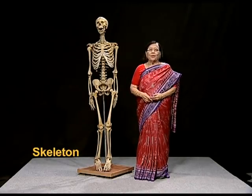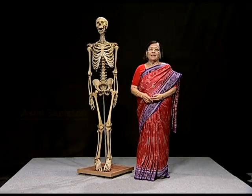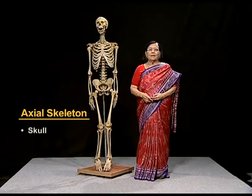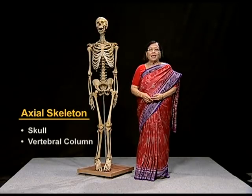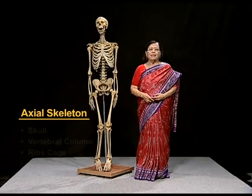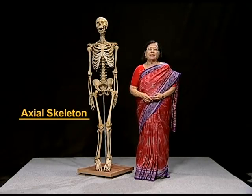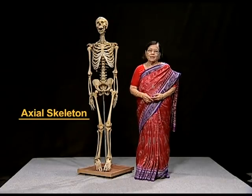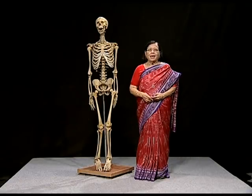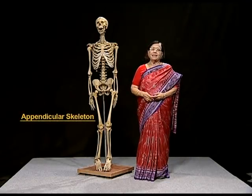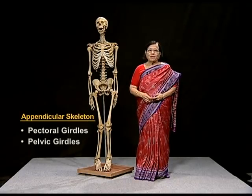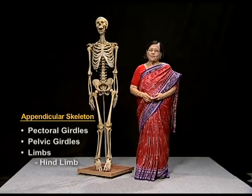As you know, skeleton has two main divisions. Axial skeleton includes the skull, the vertebral column, and the ribcage. As the name indicates, axial means axis — it makes the axis of the body, that is our head, chest, and the vertebral column. The other division is appendicular skeleton, which includes pectoral girdle, pelvic girdle, forelimbs, and hindlimbs.